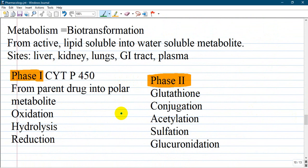Next is metabolism or biotransformation. Biotransformation means from active lipid soluble into water-soluble and inactive metabolites. Main sites of metabolism represent liver with many enzymes. Phase 1 and Phase 2 occur mainly here, also kidneys, lungs, GI tract and plasma. Phase 1 is accompanied by cytochrome P450 from parent drug into polar metabolites - oxidation, hydrolysis, and reduction are the main three enzyme reactions that occur.